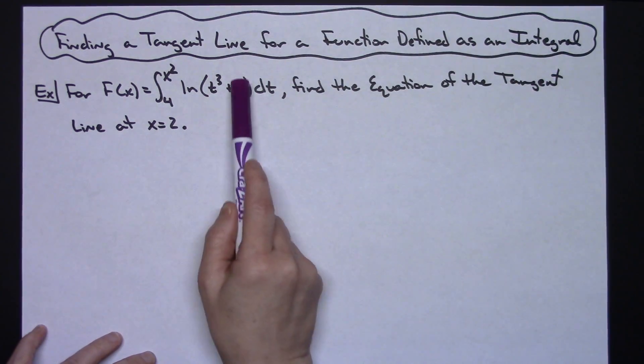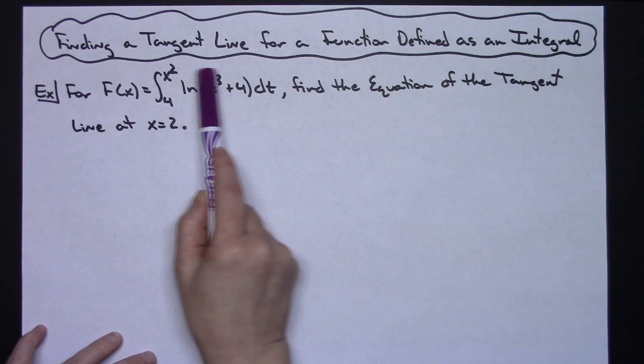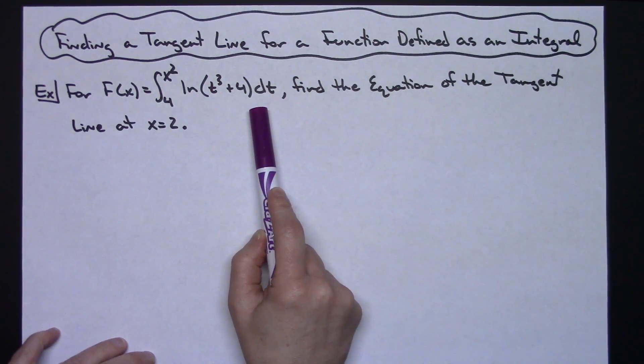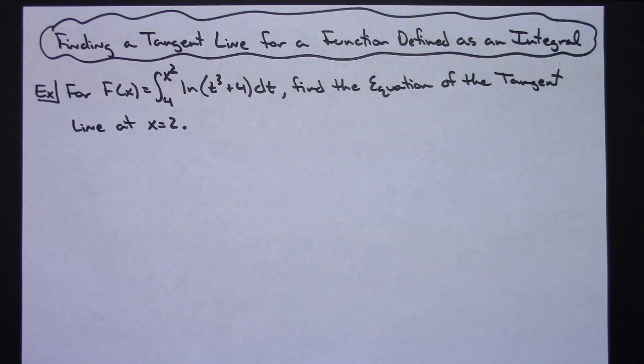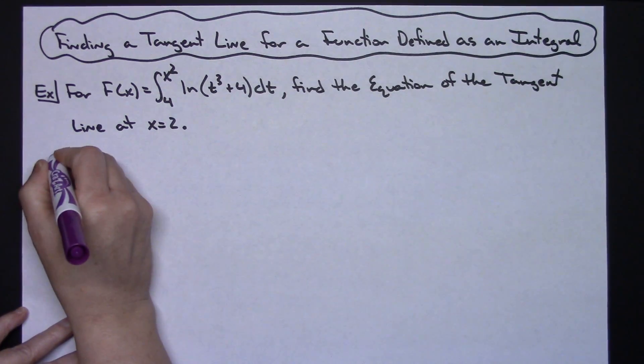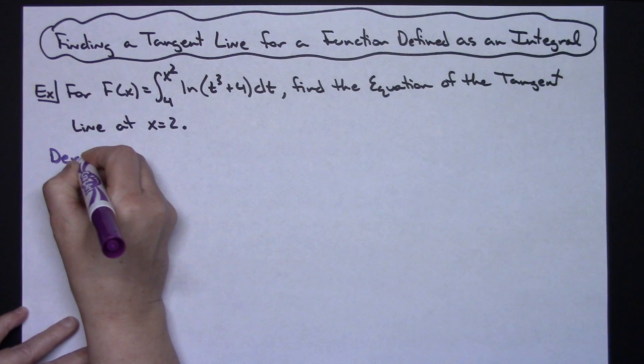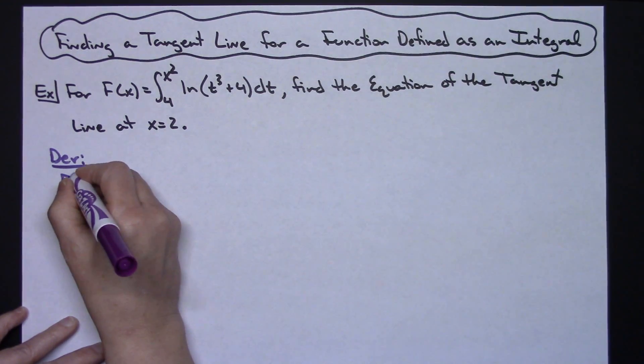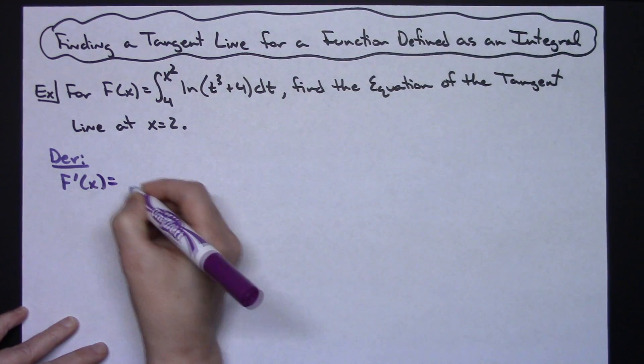The first thing I need to do is calculate the derivative of the function, and I'm going to be doing that using the second fundamental theorem of calculus along with some chain rule. So let's calculate that derivative first. We're going to have capital F prime of x is going to be equal to...